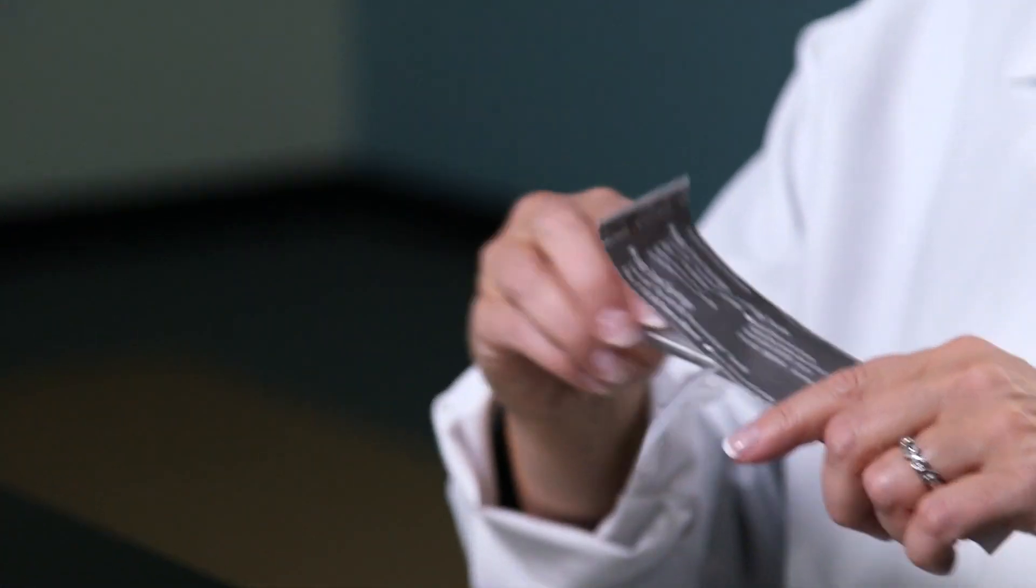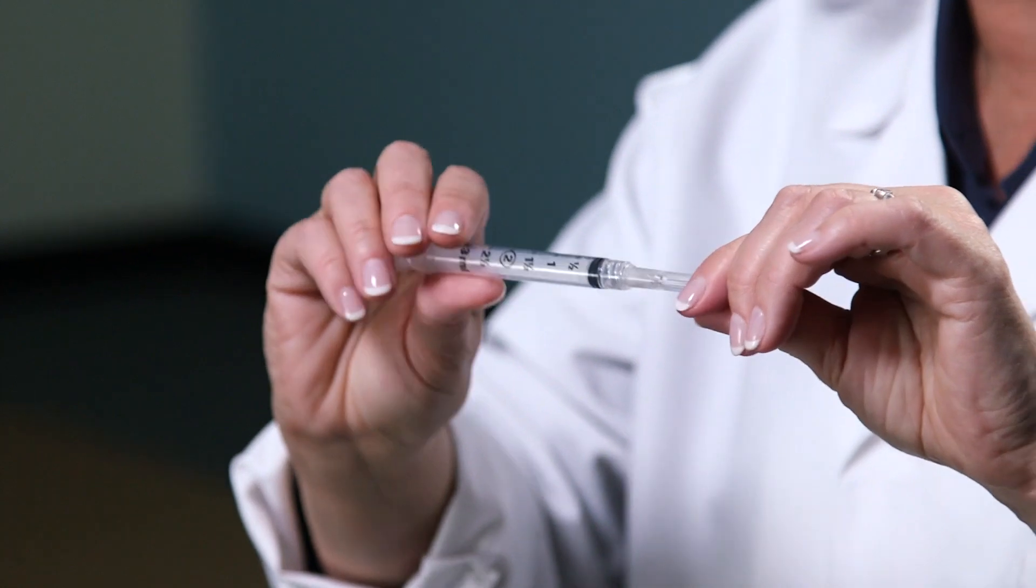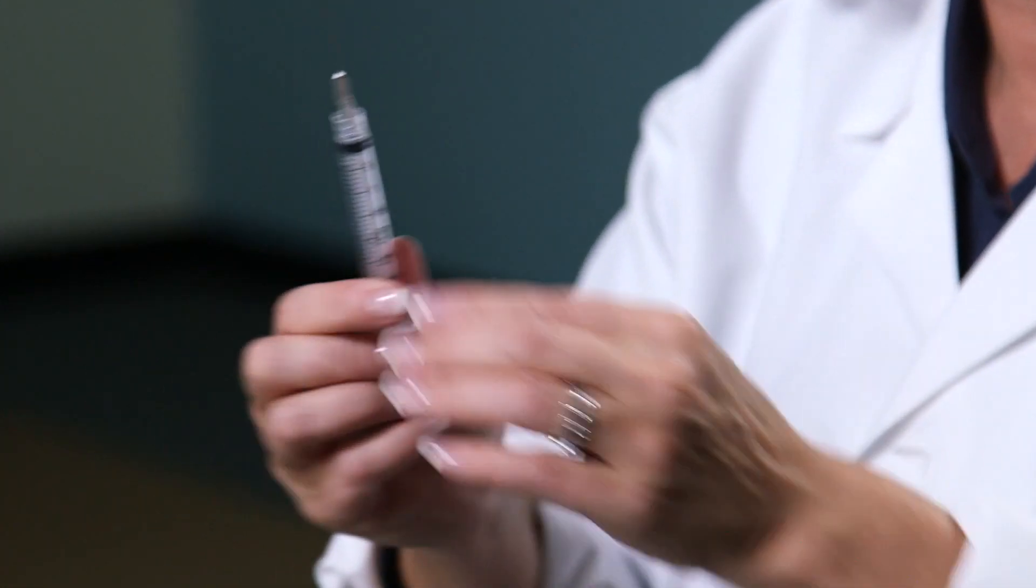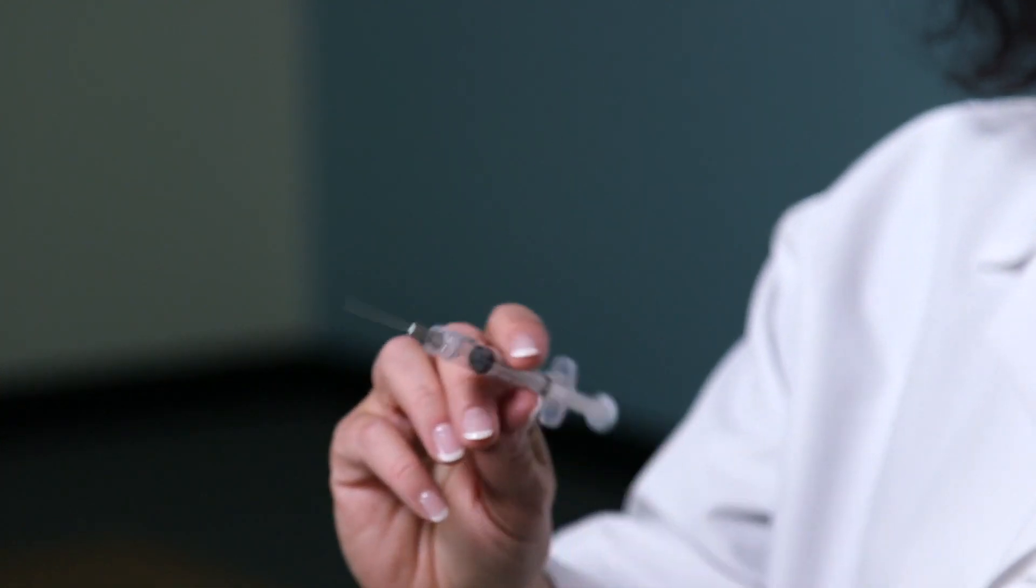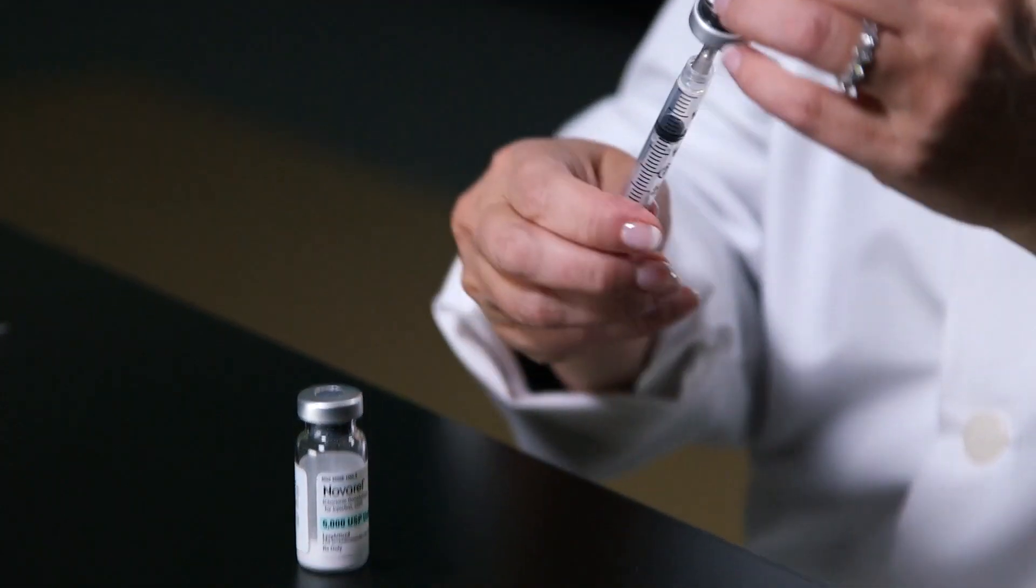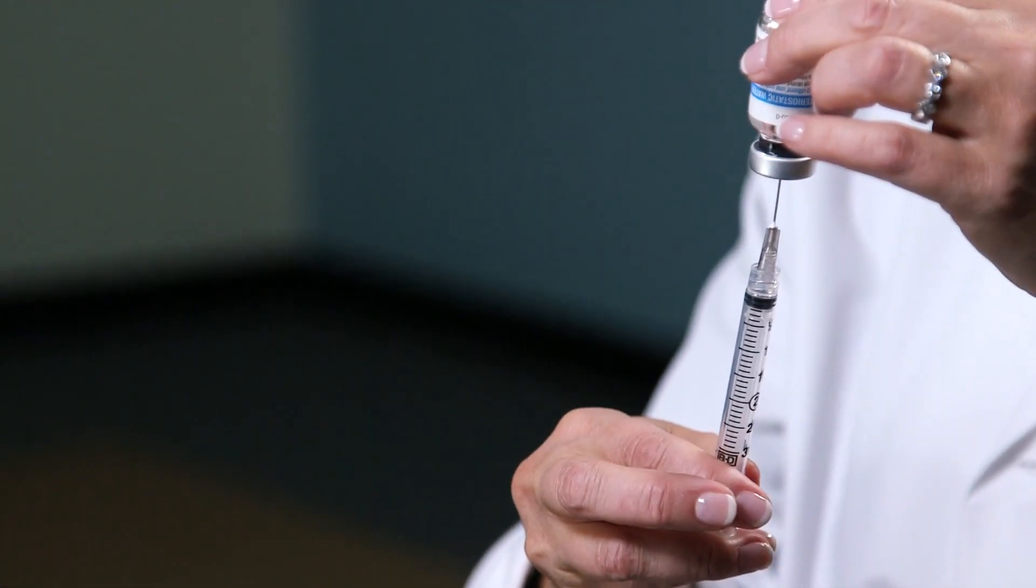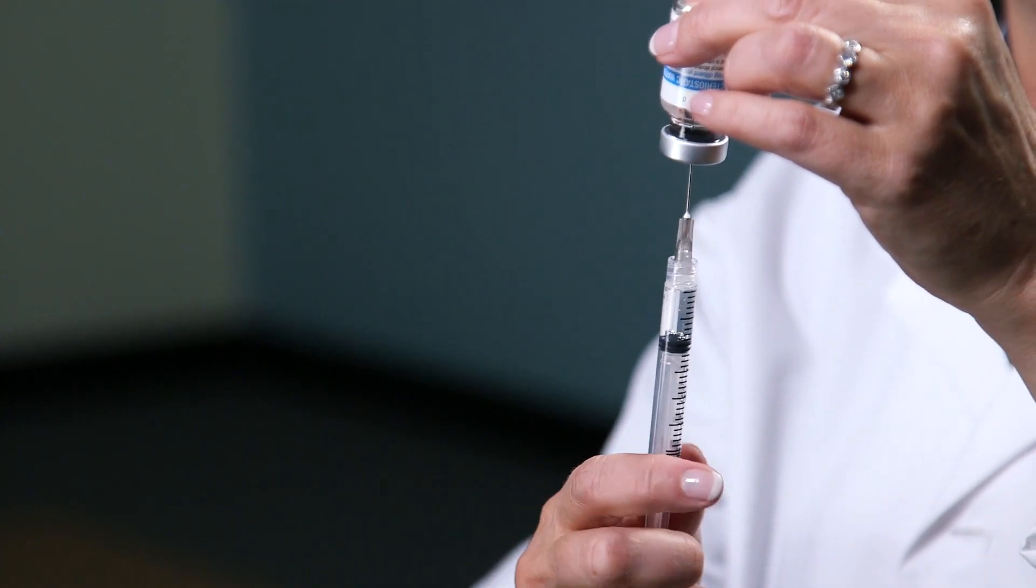Using a 3ml syringe with generally a 22 gauge, 1 1⁄2 inch needle, pull back the plunger to the prescribed amount, usually 1ml. Place the needle through the center of the rubber stopper. Inject the air. And then pull back the plunger to the 1ml mark, or the prescribed amount.